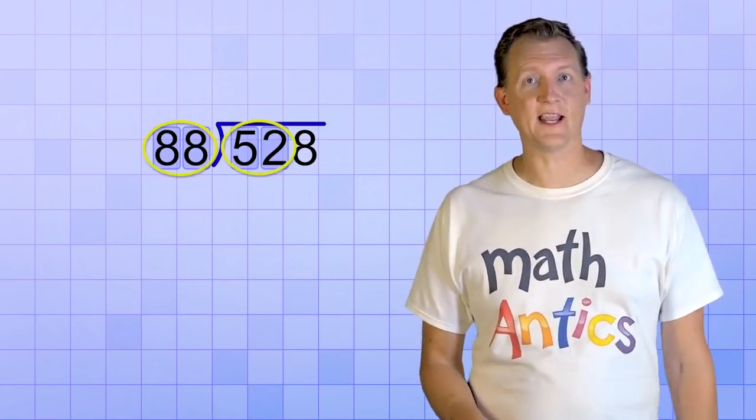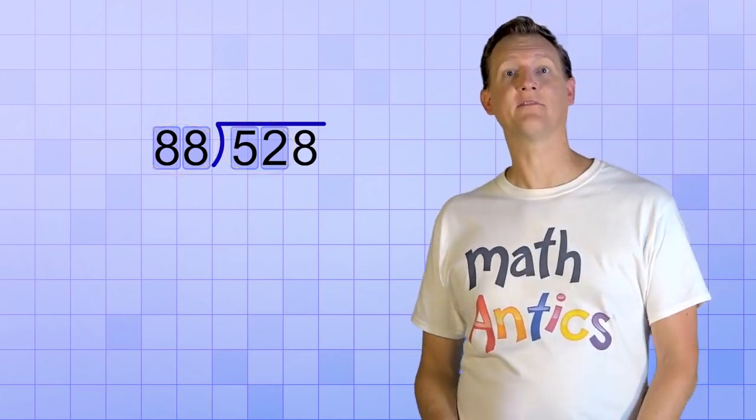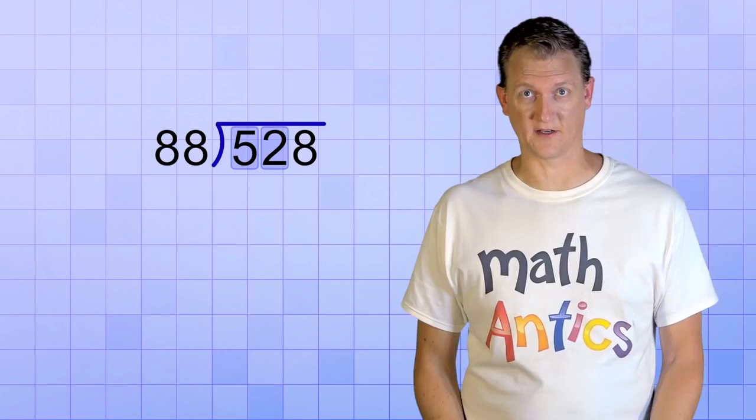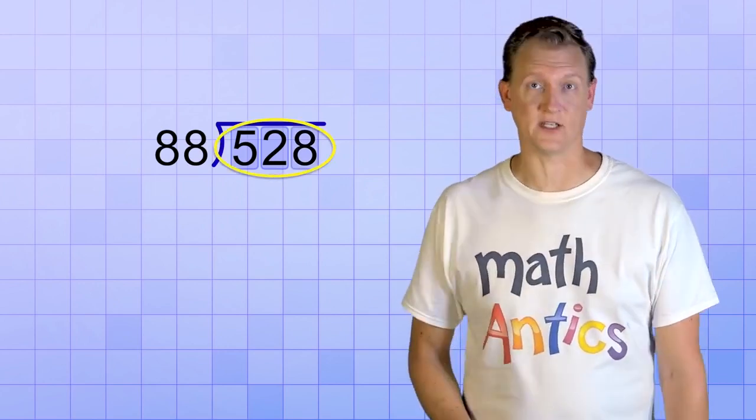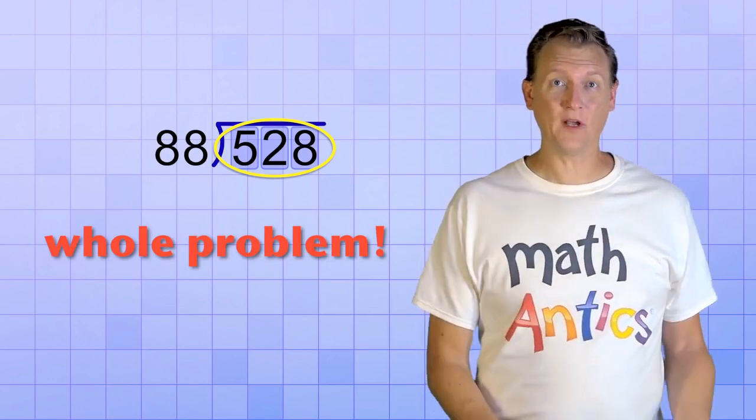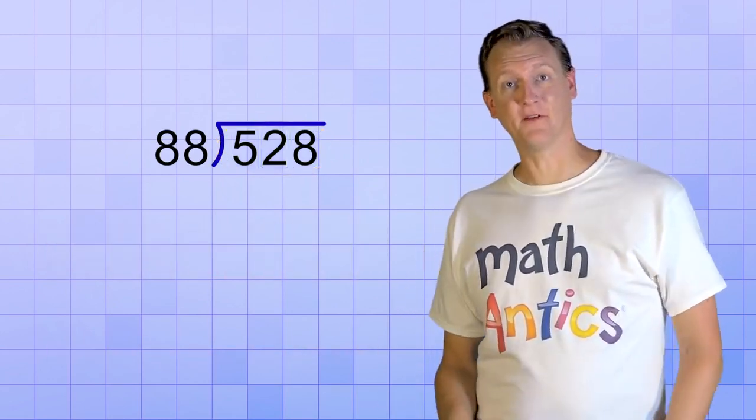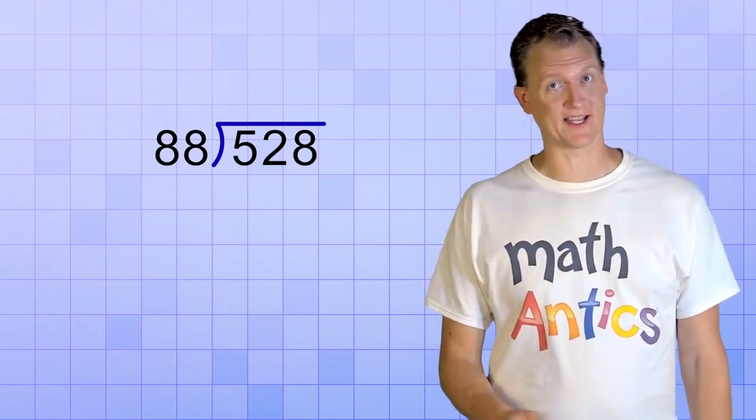And that means we're going to have to take an even bigger chunk of this dividend. We need to group the first 3 digits together. But that's just like doing the whole problem at once, without breaking it into any steps. Yep, and that's why division problems with big divisors can get difficult.